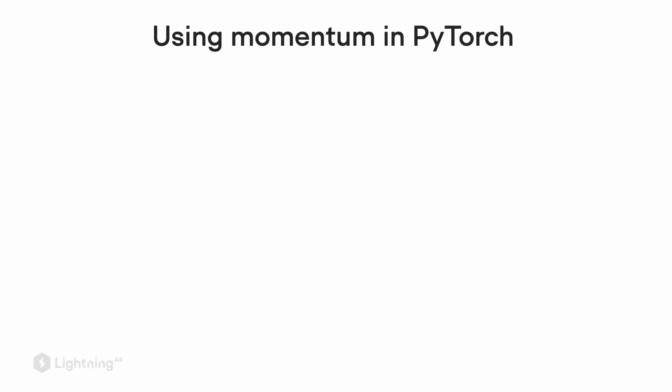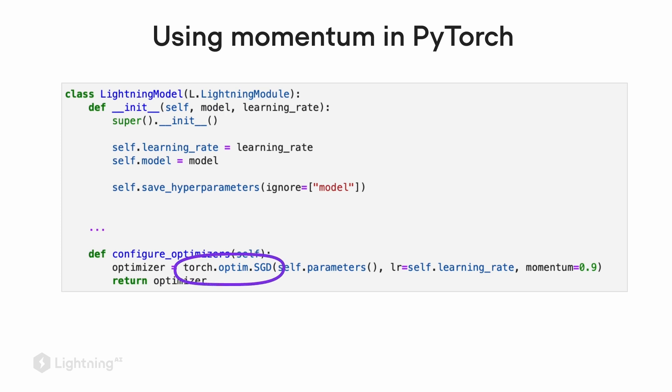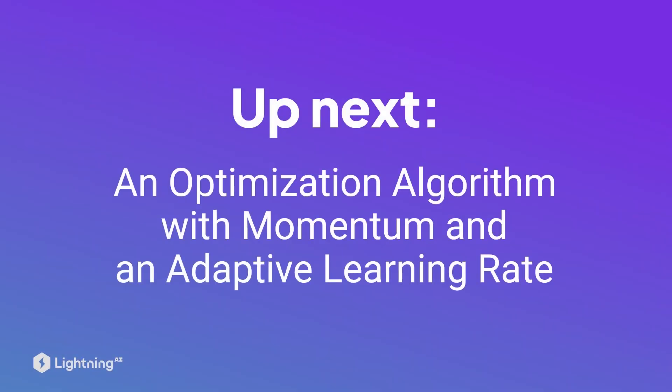We covered a lot of conceptual theory here. How do we actually now use momentum in PyTorch? Luckily, using momentum in PyTorch is super simple. We can still use our SGD class in PyTorch and just have to make a small modification. Here we can set the value momentum equals 0.9 to actually use a momentum term of 0.9. In fact, the value for the momentum term is yet another hyperparameter. However, 0.9 is a common choice in practice. Now that we covered this momentum term, in the next video, let's introduce yet another optimization algorithm that is commonly used in practice. It will involve both a momentum term and an adaptive learning rate.